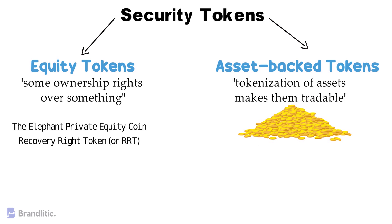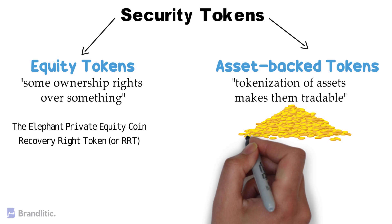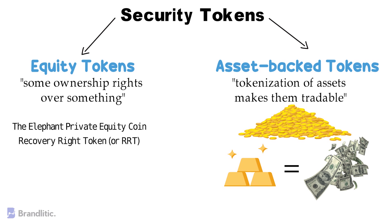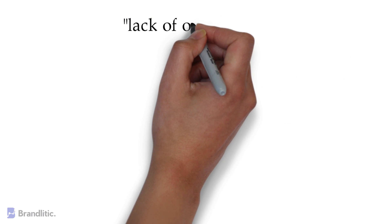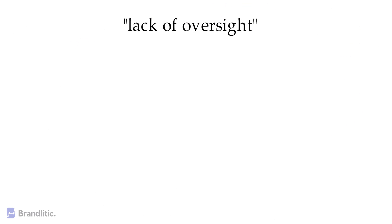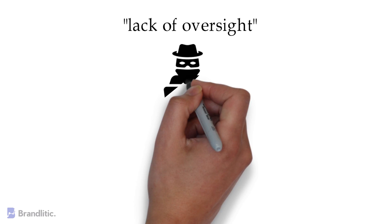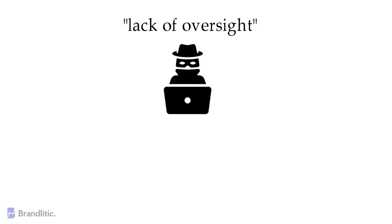This is very similar to paper money: instead of trading gold, you trade paper which represents a certain amount of gold. However, the issue with asset-backed tokens is the lack of oversight. The issuer of the token can claim the asset is backed by anything, but without actual checks, this claim isn't worth anything significant.